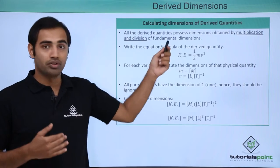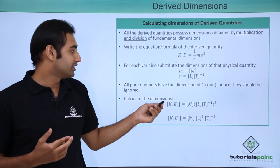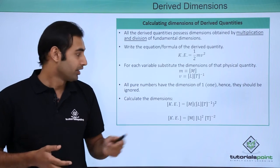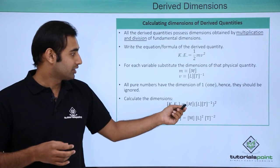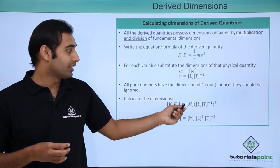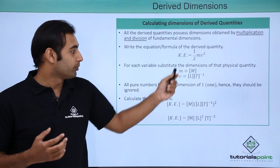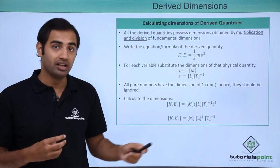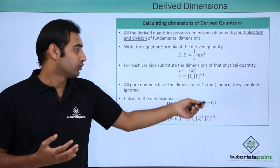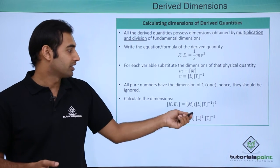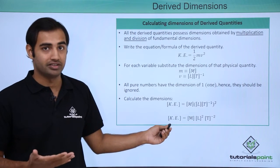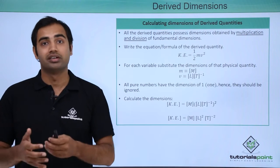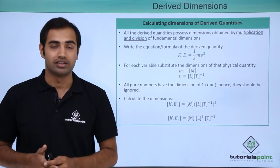So essentially, after putting all the dimensions, the dimension of kinetic energy — represented by square brackets around the variable name — is: since half is dimensionless its contribution is 1, for mass the dimension is M, for v the dimension is LT raised to the power minus 1, and since it is v squared it becomes the whole square of LT raised to the power minus 1. Upon calculation, the dimensions of kinetic energy come out to be ML squared T raised to the power minus 2.